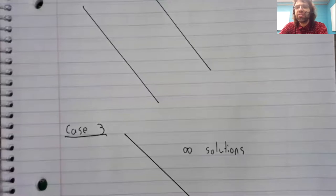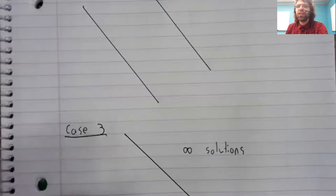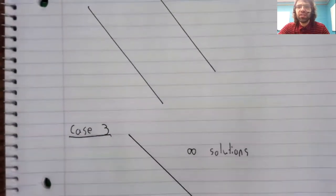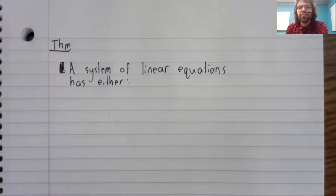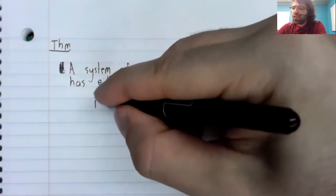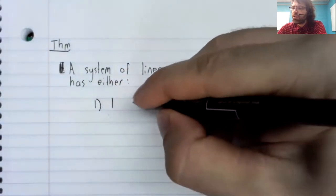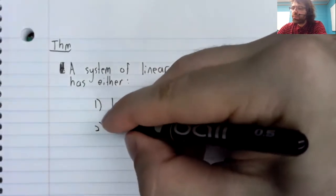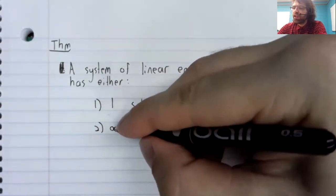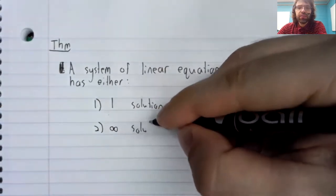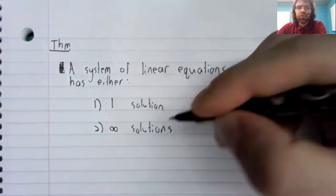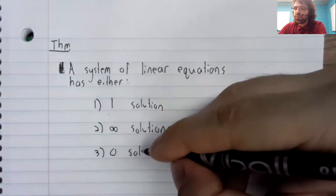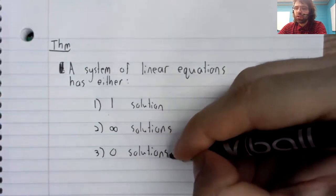But every system of linear equations falls into one of these cases. Every system of linear equations has either one solution, or infinitely many solutions, or zero solutions.